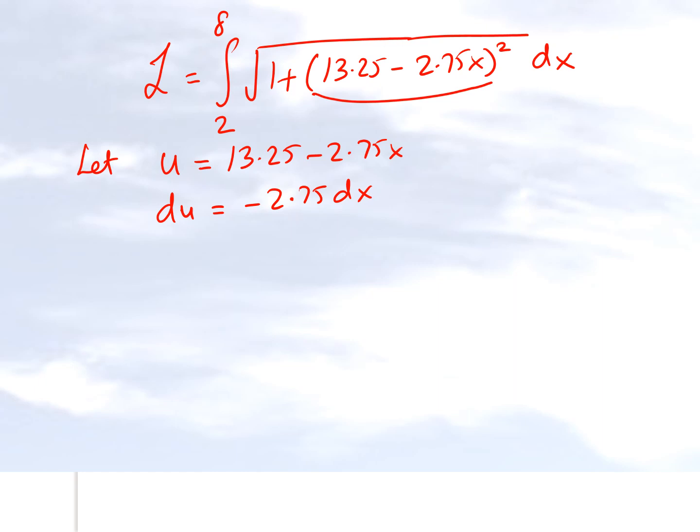When x equals 2, which is this number right here, u becomes 7.75. And when x equals 8, which is the upper limit, u becomes negative 8.75.